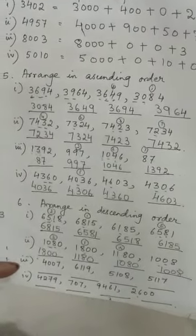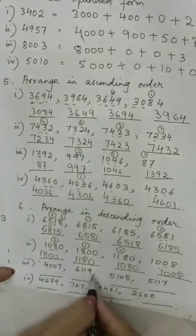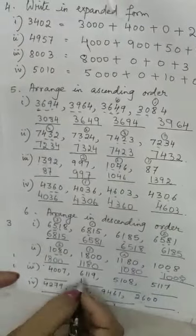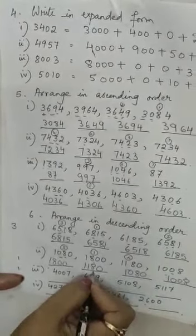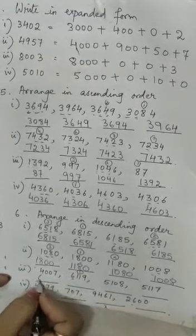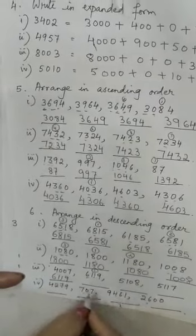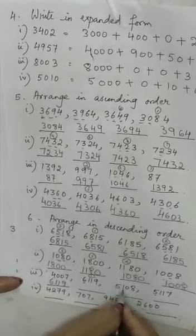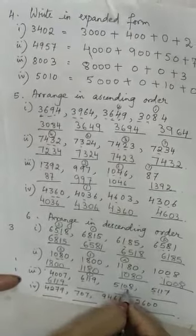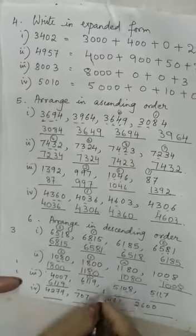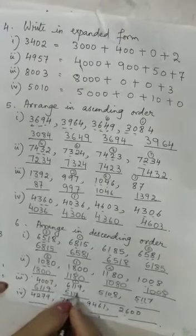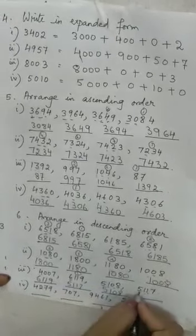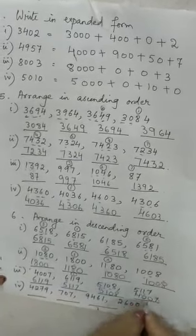Let us see the third example: 4007, 6119, 5108, 5117. Here 6 is in the thousands place, so 6119 is the greatest number. Then comes 5108 and 5117, both with 5 in thousands and 1 in hundreds. In the tens place, here is 0 and here is 1 — 1 is greater than 0, so 5117 comes next, then 5108, and lastly 4007. Children, I hope you are understanding this.